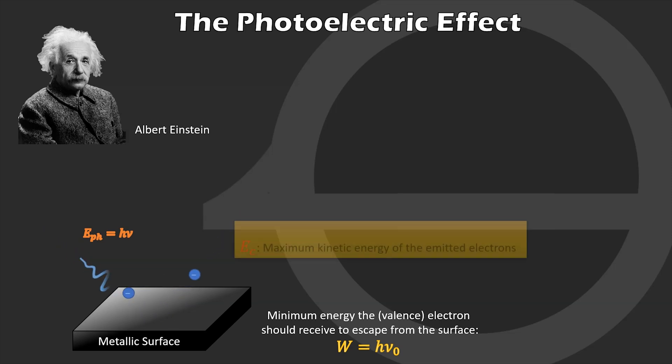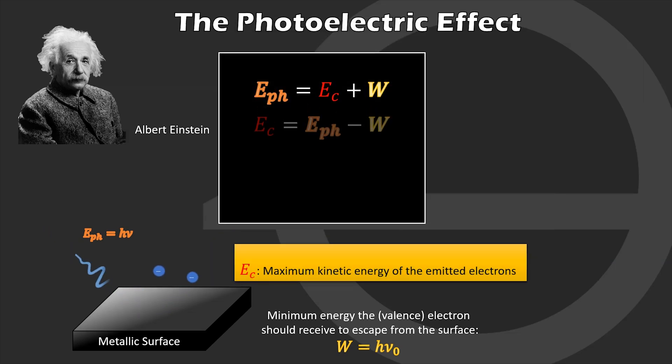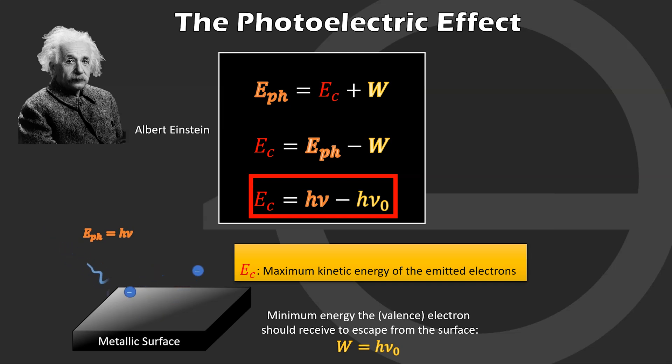The maximum kinetic energy Ec of the emitted electron is therefore the difference between the incident photon energy and electron escaping energy, and it is given by the following equation. As shown in this equation, Einstein predicted that the kinetic energy of the emitted electron increases linearly as we increase the frequency of the incident light.